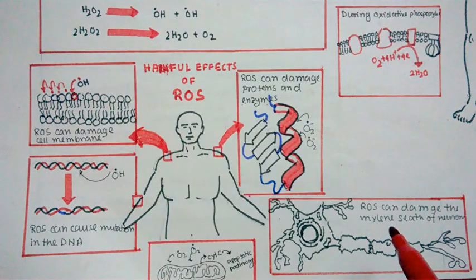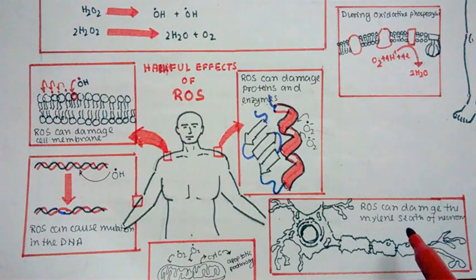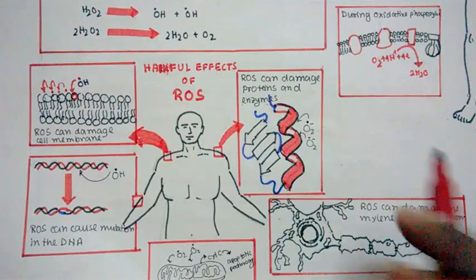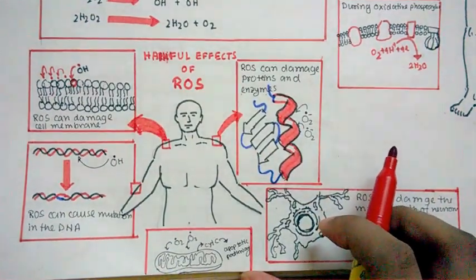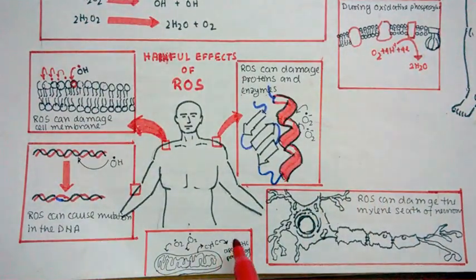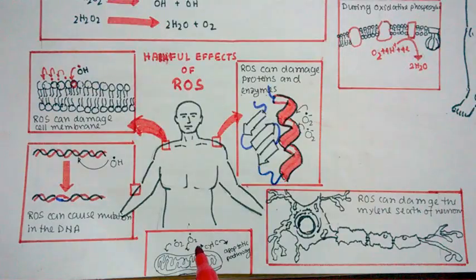So when there is an increase of ROS, risk of neurodegeneration also increases, and it is a highly classified research topic in these days. Apart from neuron, ROS can also have damaging effect on mitochondria.